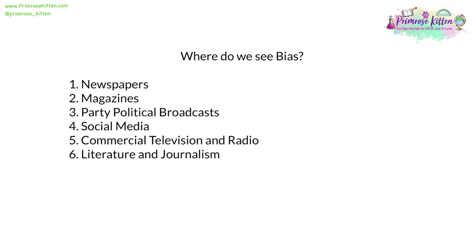Magazines are similar to newspapers — many will have a political bias, such as The Spectator, which has a bias towards the centre-right. Party political broadcasts have obvious and explicit bias; that bias is built into what they are. Social media sees a lot of bias. It's not the platforms themselves, like Facebook, YouTube, or Instagram, which are biased — it's the content on them. Memes, graphics, and posts will appear neutral or from an ordinary member of the public, but in fact will have a political bias, supporting a particular ideology, party, or individual. Social media and fake news is playing a bigger and bigger part in political discourse.